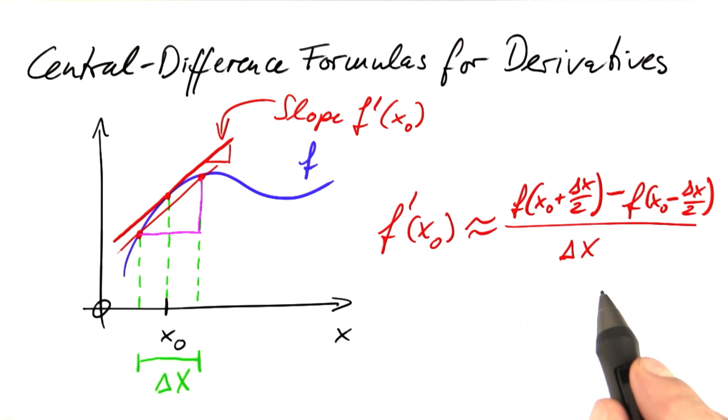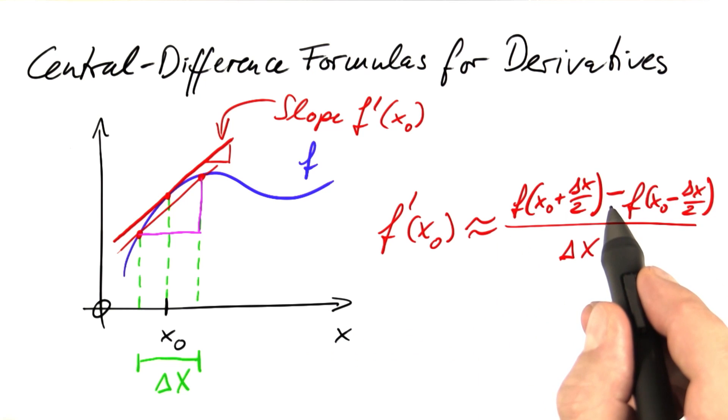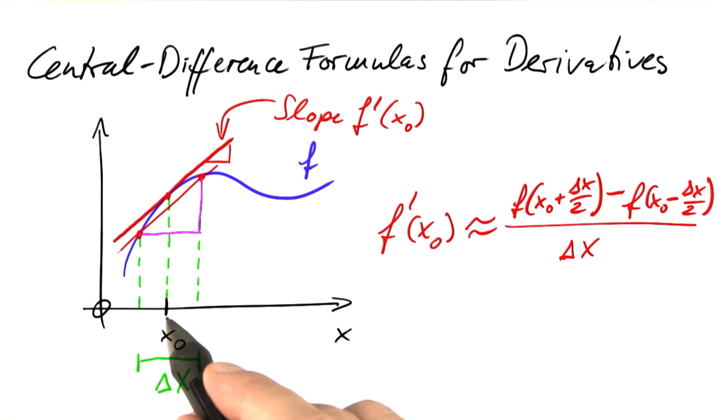Now you can get an idea about why this is called central difference. Obviously it's a difference, and the difference is centered at x0.